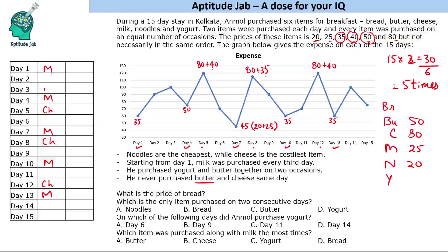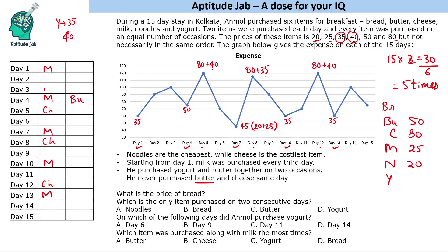So on day 4 it will be milk plus butter. We are now left with 35 and 40 — we need to find which is bread and which is yogurt among these values. We know butter is 50. If yogurt is 35 then yogurt plus butter equals 85; if yogurt is 40 then yogurt plus butter equals 90. Let us check how many times we get 90 and how many times we get 85 on the graph.